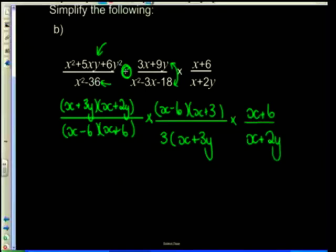For example, x plus 3y, x plus 3y. As long as you're cancelling a numerator with a denominator, you are safe. I've got x minus 6, x minus 6. I've got an x plus 6 and an x plus 6, and x plus 2y and an x plus 2y. That's leaving me with this bracket up here of x plus 3 and that little term of 3 down there.